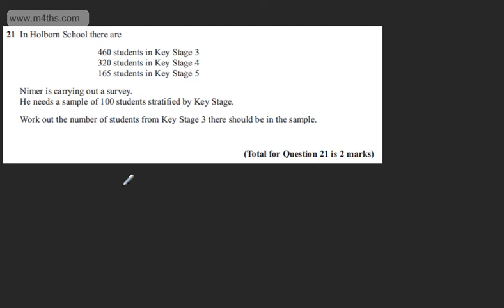This is question 21 and it carries two marks. It says in Holborn School there are 460 students in Key Stage 3, 320 students in Key Stage 4, 165 students in Key Stage 5.